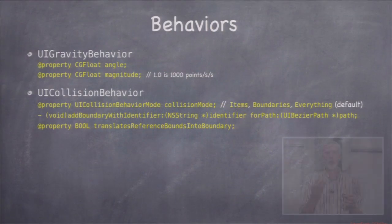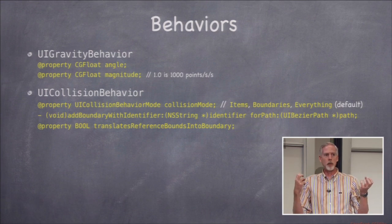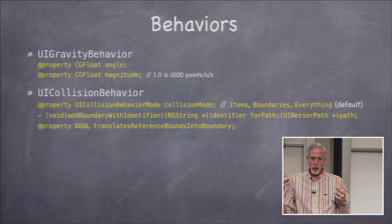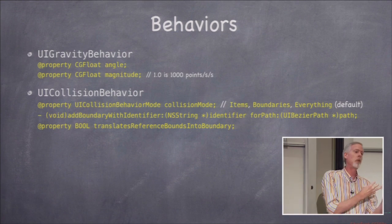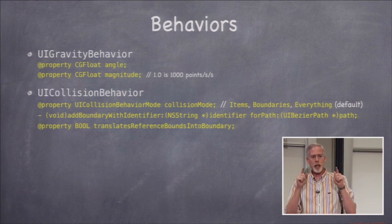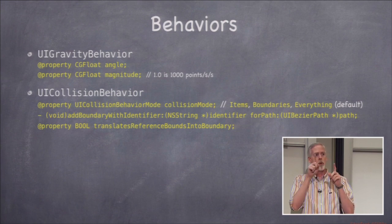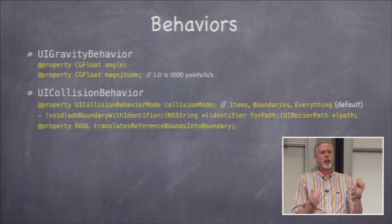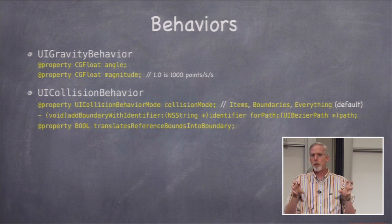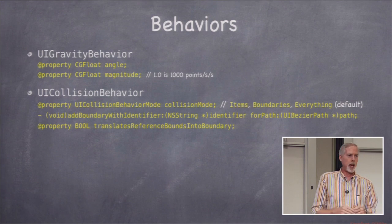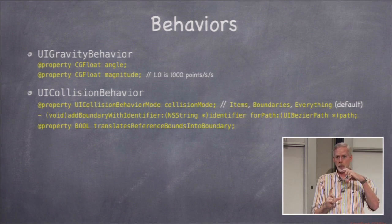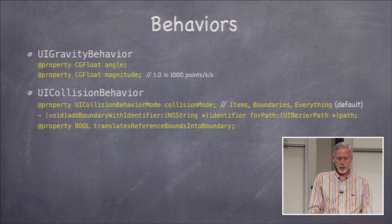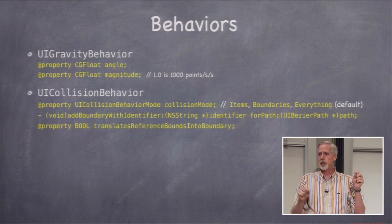Collision behavior: items inside a collision behavior will bounce off each other like real-world collisions. You can specify elasticity, how bouncy they are, and even the density so a denser item smashes another out of the way. You can also set boundaries using any UIBezierPath — things will bounce off it. You can set the reference view's bounds as boundaries using translateReferenceBoundsIntoBoundary = YES, so things bounce off the edges. The collision mode determines whether items bounce off each other, just off boundaries, or both.